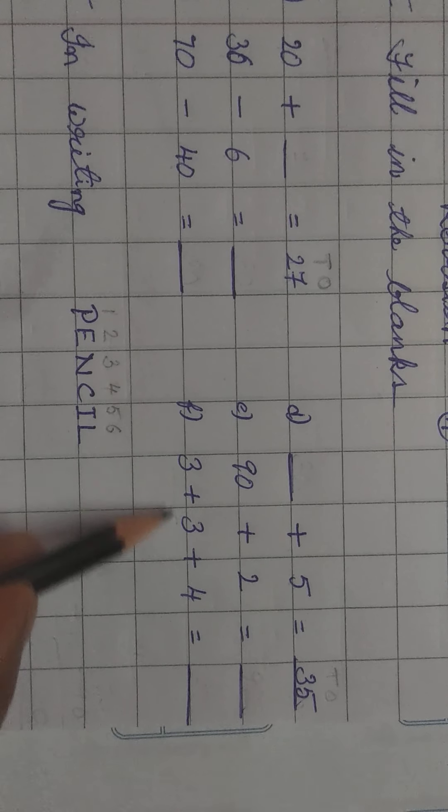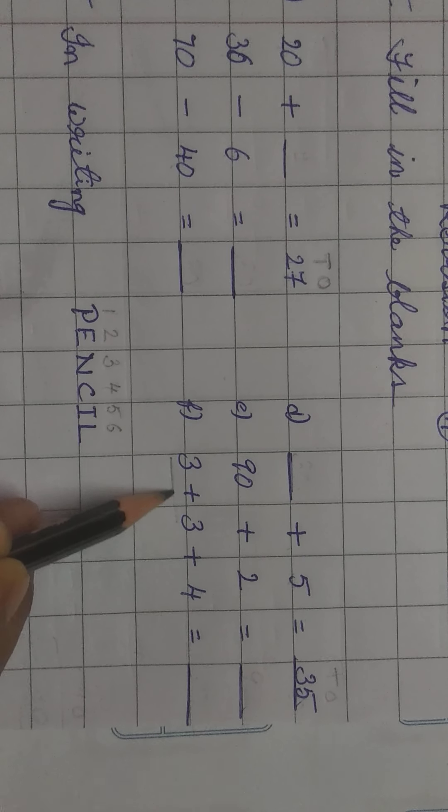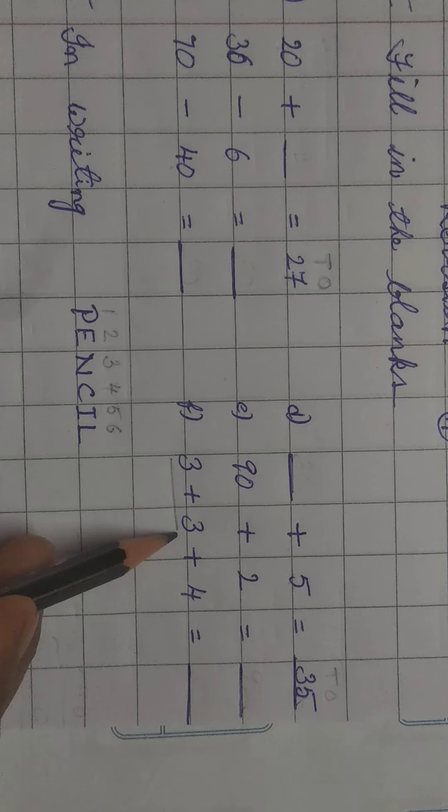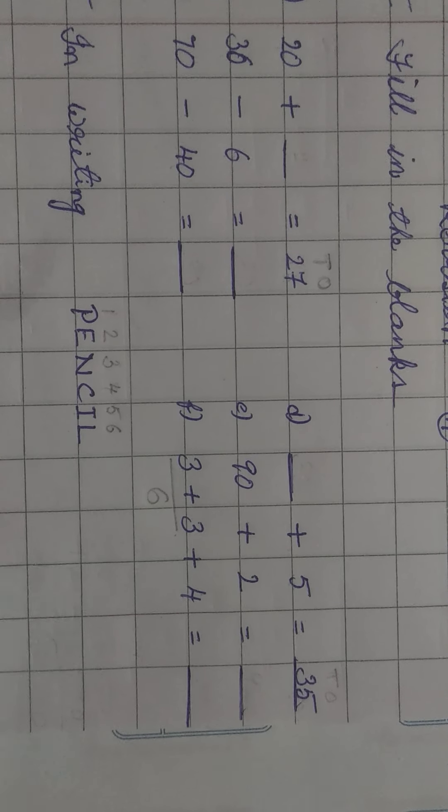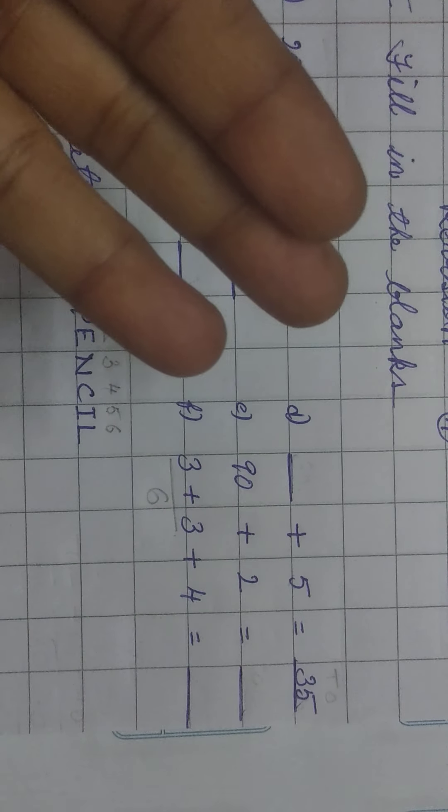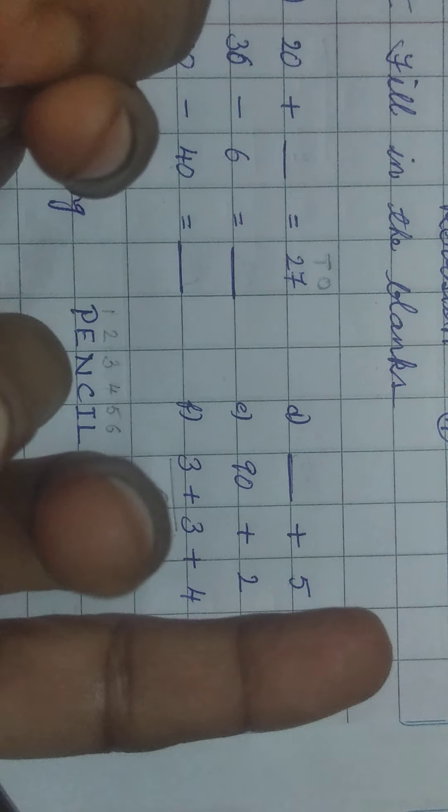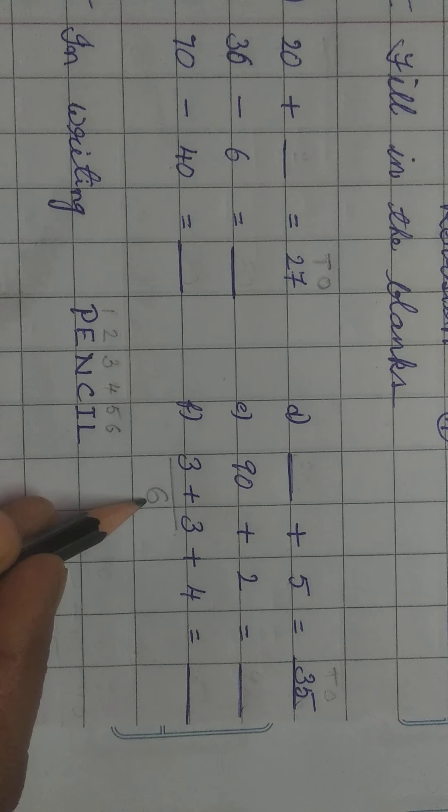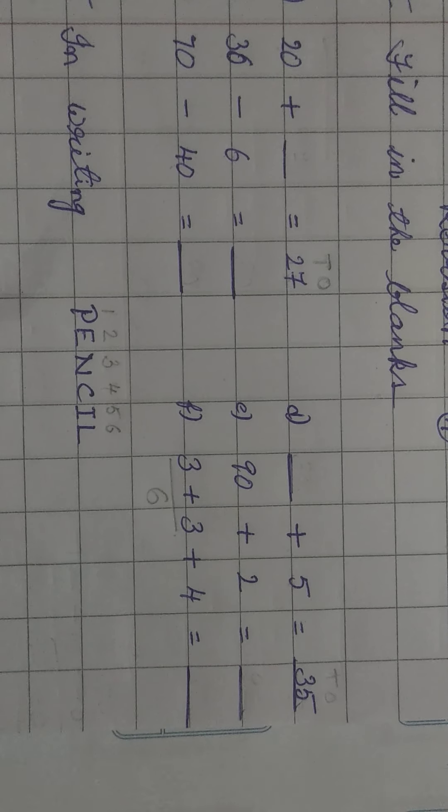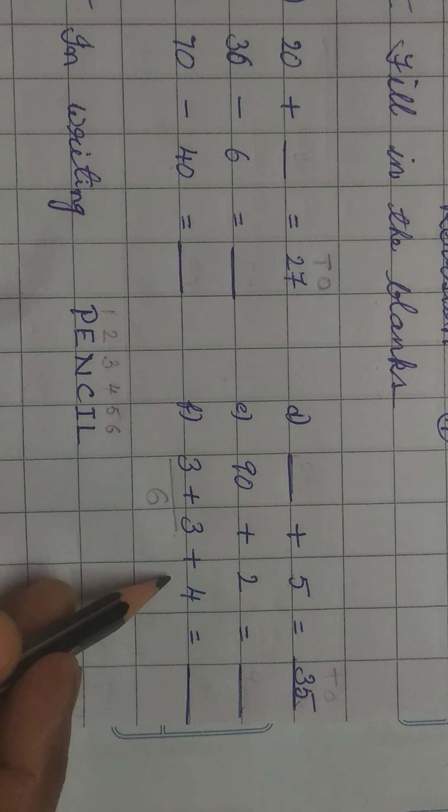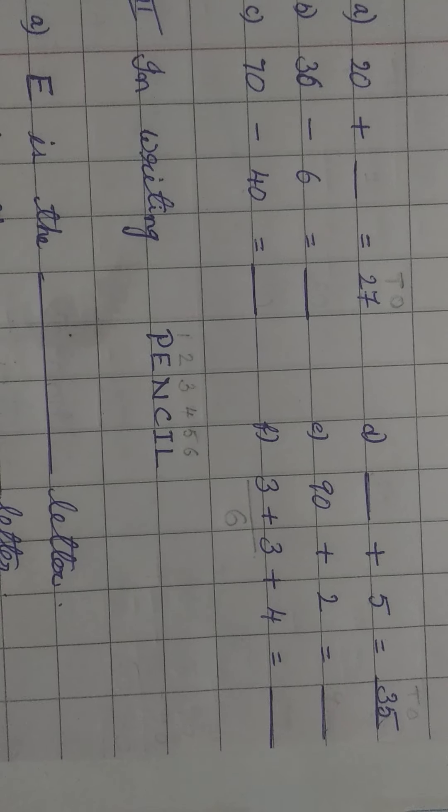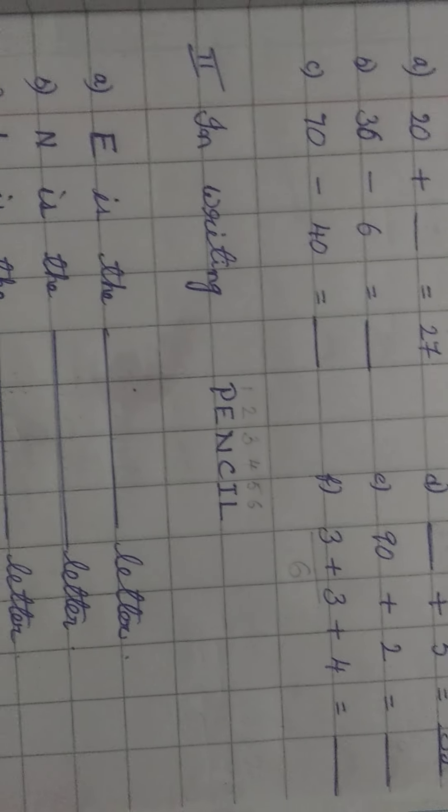And 3 plus 3 plus 4. 3 plus 3, first we will count these two numbers. 3 plus 3 is equal to 6 na? Look at this. 3 plus 3 is equal to 6: 1, 2, 3, 4, 5, 6. This 6 and the third number ko add karengi. 6 plus 4 is equal to 10. Is ke liye bhi rough karengi. Rough work karne ke baad answer likhi.